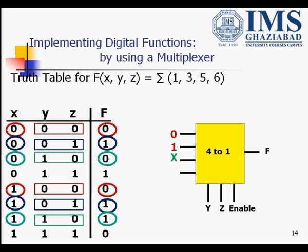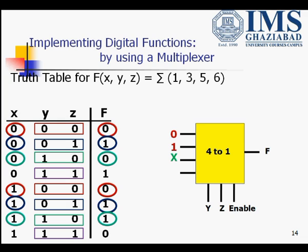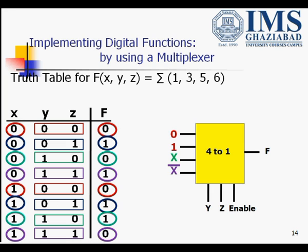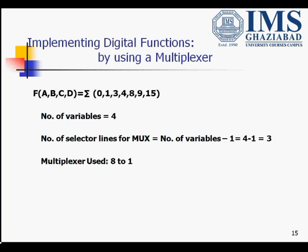In the fourth combination, y,z = 1,1: when x=0 the function value is 1, and when x=1 the function value is 0. The function value is the opposite of x, so the fourth input comes out to be x̄. And this is how we implement a boolean function using a multiplexer.